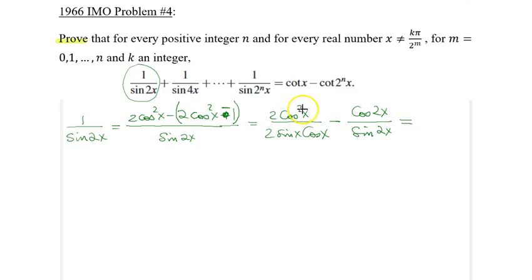So I'm in good shape because 2 cosine square x over 2 sine x cosine x is just cosine x over sine x minus, and here on the minus cosine 2x over sine 2x, that would be just cotangent 2x. In a similar way, this is just cotangent x, so we have the expression that we need.